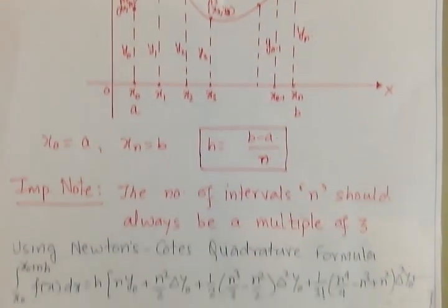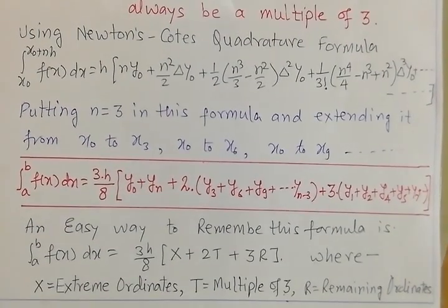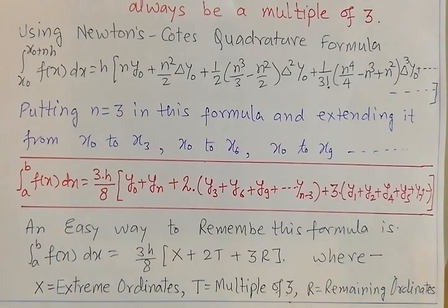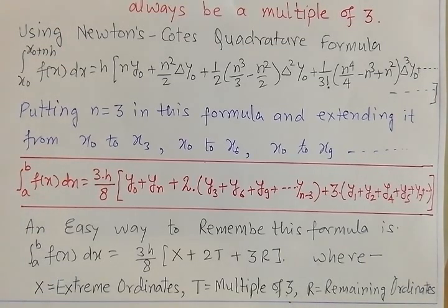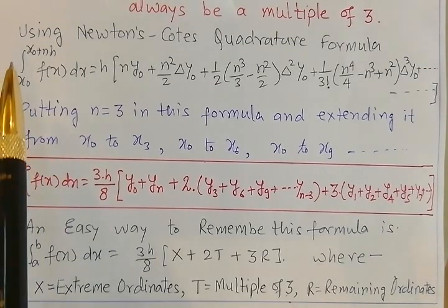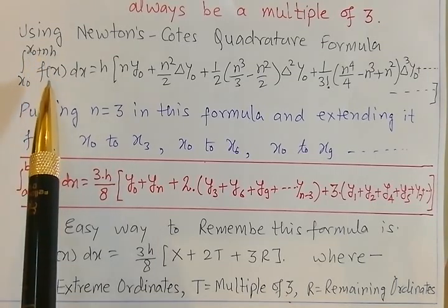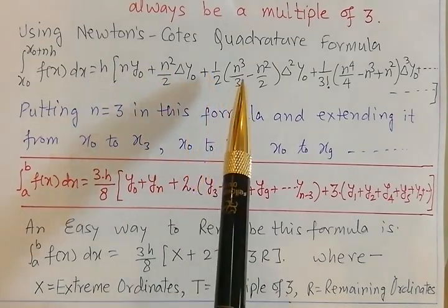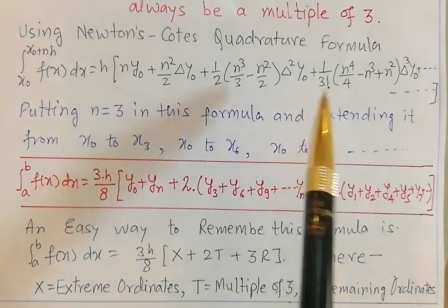Let us look at the proof using Newton-Cotes quadrature formula, which is called the father of numerical integration because all methods — trapezoidal rule, Simpson's one-third rule, and Simpson's 3/8 rule — are derived from it. The formula is: the integral from x0 to x0 + nh of f(x) dx equals h times [n·y0 + (n²/2)·Δy0 + (n³/3 − n²/2)·Δ²y0 + ...], where h is the width of interval, n is the number of intervals, y0 are the ordinates, and Δ is the forward difference operator.